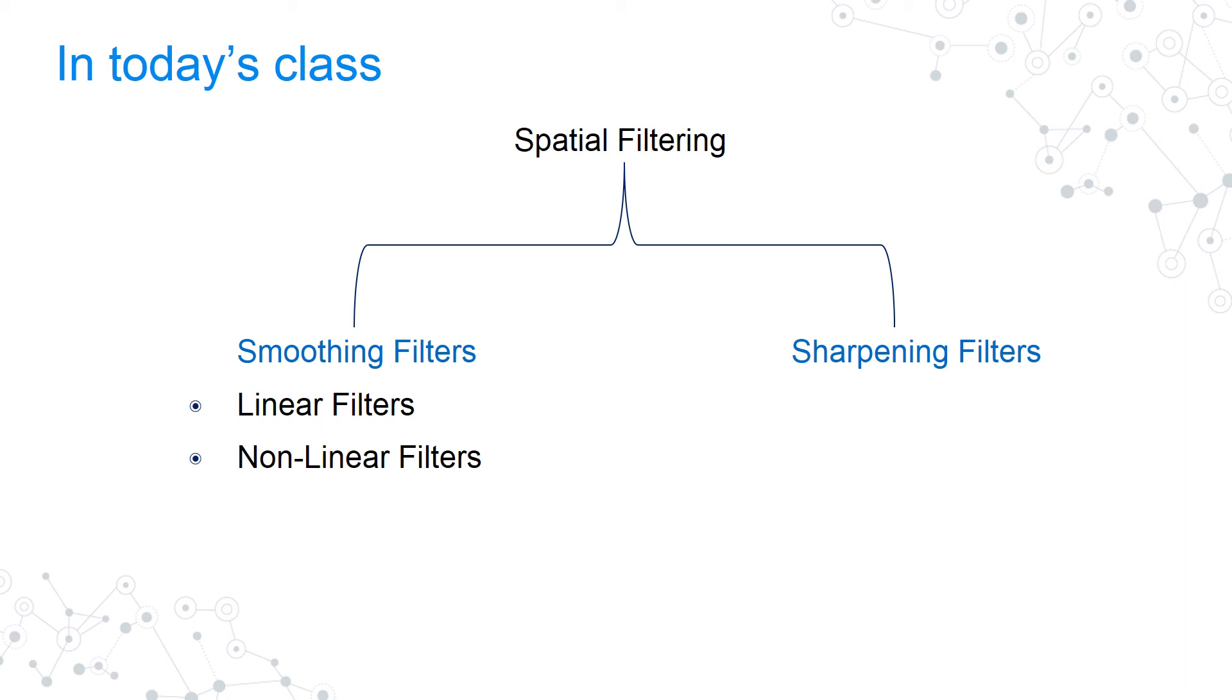Now, we are going to study the complete process of smoothing in detail. How is my mask moving over an image, filtering and giving me an output which could be, depending on the mask, an average or a weighted average of the input neighborhood pixels.